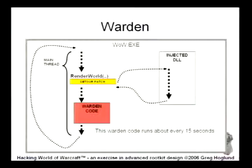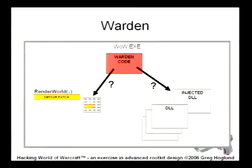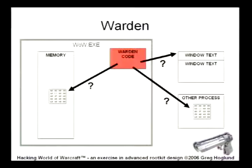What it's going to do when a certain message comes in is go up and find this injected DLL and this detour patch. It can scan memory and easily see that there's an integrity violation on the detour patch, as well as get all the DLLs out of memory and see that there's an injected DLL. Furthermore, it doesn't stop there — it scans all of memory inside the process. It grabs all the window text from all the open windows on your system, and also opens up all the other processes and reads their memory, scanning all that memory looking for botting programs and cheats.